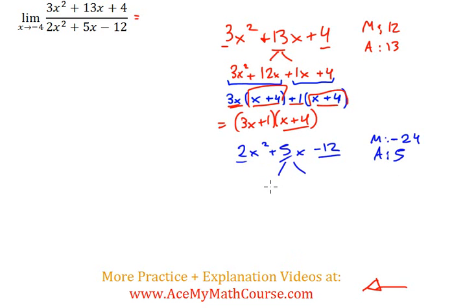How about 8 and negative 3? So split up the 5x into 8x minus 3x. Bring down the negative 12, bring down the 2x squared. Factor by grouping now. The greatest common factor of 2x squared and 8x is just 2x. 2x squared divided by 2x is just x, and 8x divided by 2x is just 4.